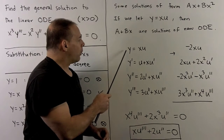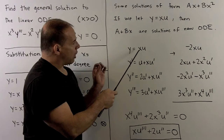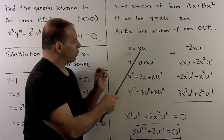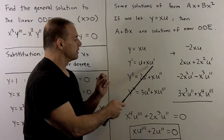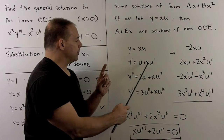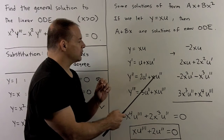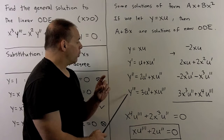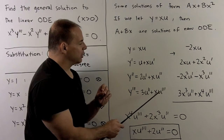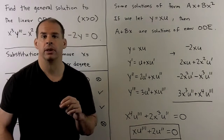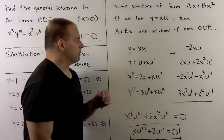Y is equal to X times U, where U is a function of X. Using the product rule, Y prime is U plus X U prime. We keep taking derivatives: Y double prime is 2U prime plus X U double prime, and Y triple prime is 3U double prime plus X U triple prime. Now we put that through our equation and see what comes out.